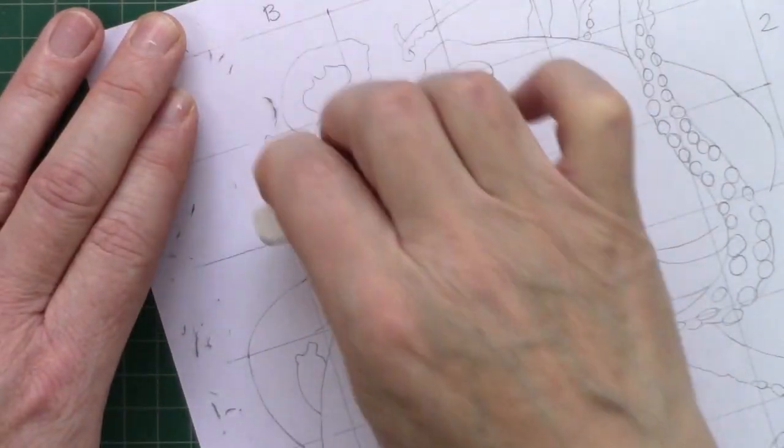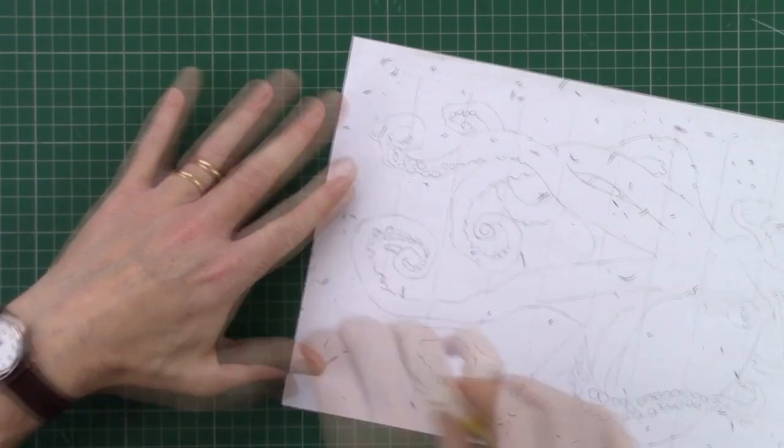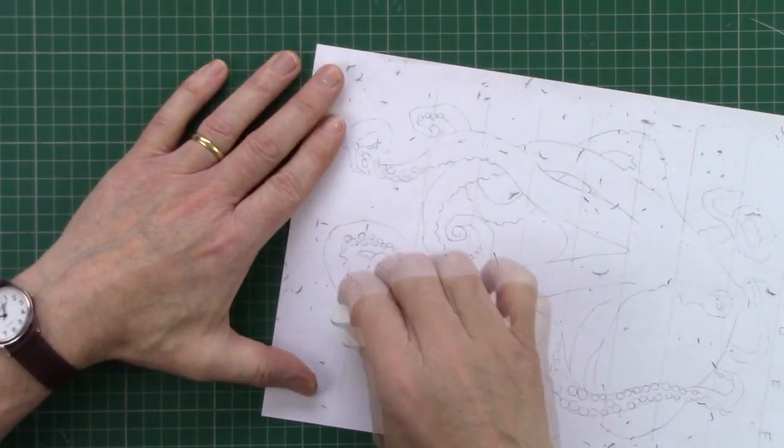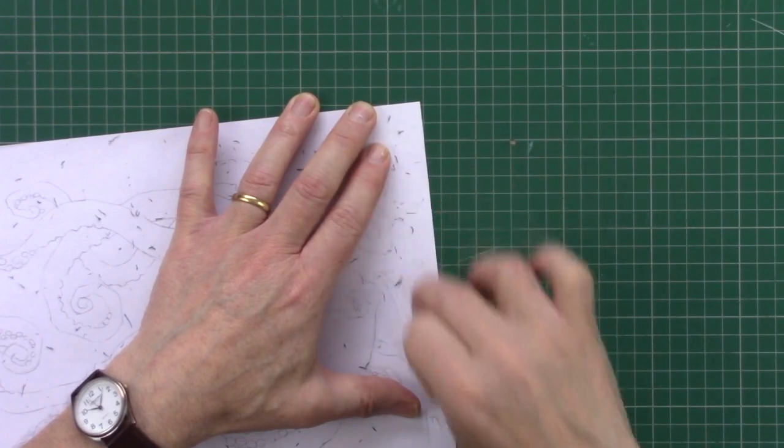Once you've finished your octopus drawing, you can rub out those guidelines with a pencil eraser. If you find that you accidentally rub out some of your drawing, just go over it again with a pencil.